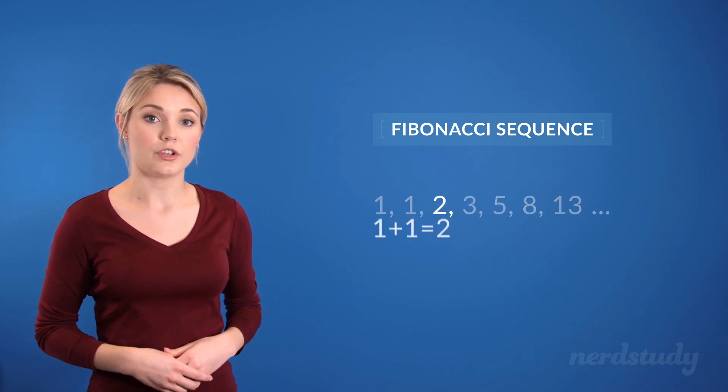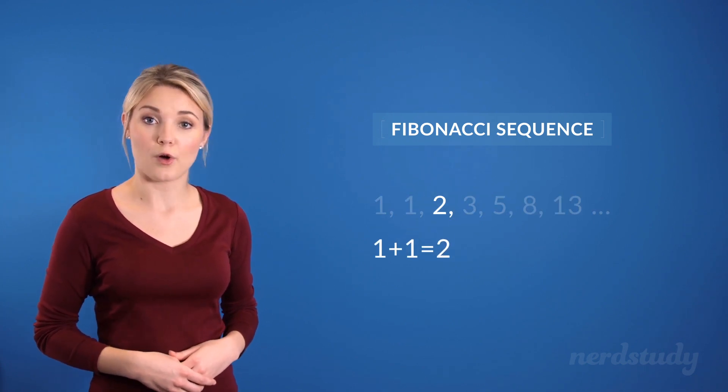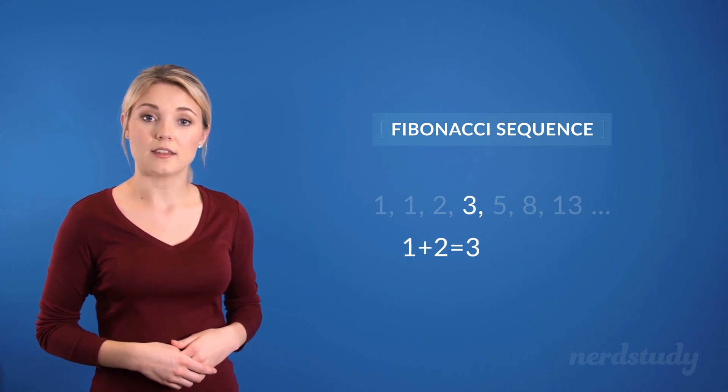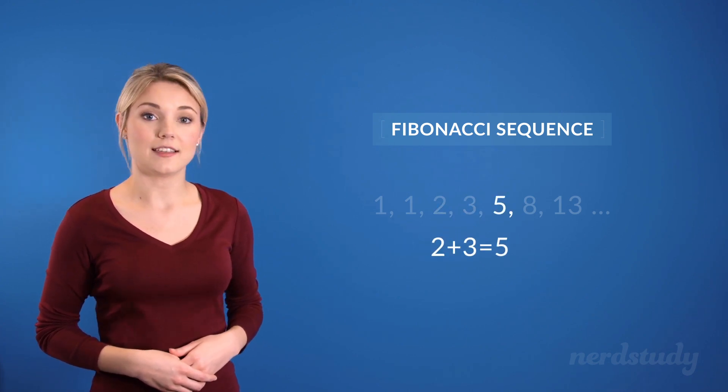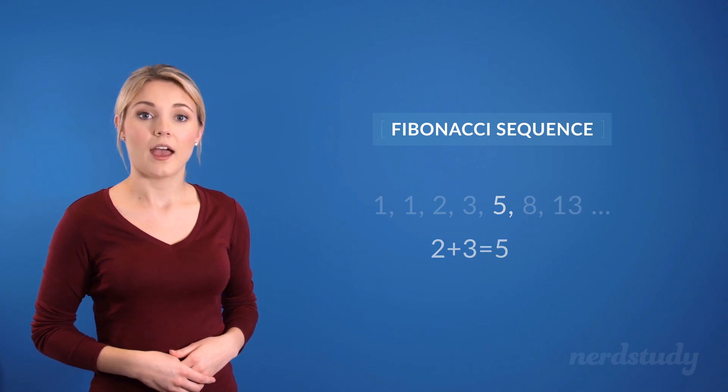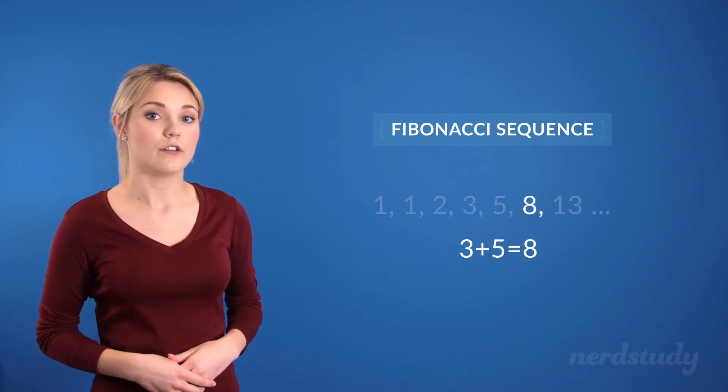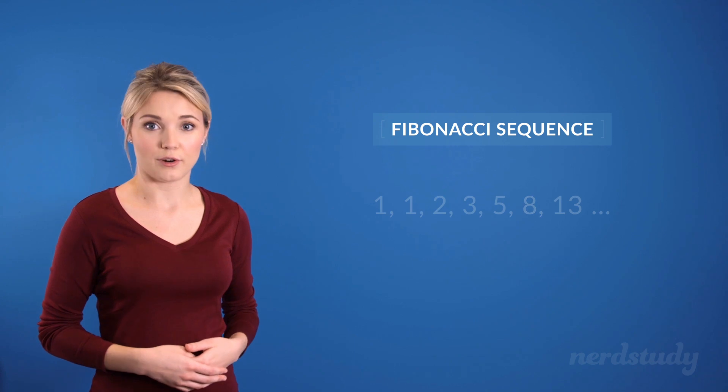Each term starting from the third term is an addition of its previous two terms. So as we can see, 2 is an addition of 1 and 1, also 3 is the addition of 1 and 2, and 5 is the addition of 2 and 3. As well, 8 is the addition of 3 and 5, and so on and so forth.